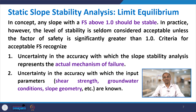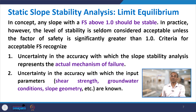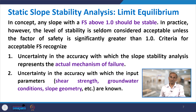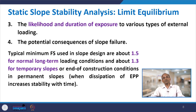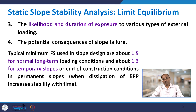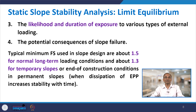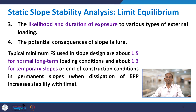The second uncertainty is the accuracy of input parameters, for example shear strength, groundwater conditions, and slope geometry. When we carry out slope stability analysis, we assume certain geometrical and material properties to represent actual conditions, but those are uncertain. The third uncertainty is the likelihood and duration of exposure to various types of external loading. The fourth is the potential consequence of slope failure, because if a slope fails there may be catastrophic damage. As a result, the factor of safety is kept quite high compared to 1.